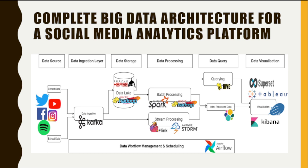In the data processing layer, we can use Apache Spark to process the social network data in real time. We can set up a Spark cluster and use Spark Streaming to process the data, and use Apache Kafka to ingest the processed data back into a Kafka topic. We can also use Apache Flink or Storm for batch and stream processing, or Hadoop for batch processing. Batch processing uses data stored in the data lake, while stream processing handles data in real time without needing to store it first.